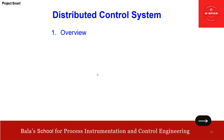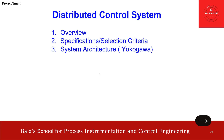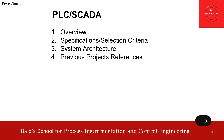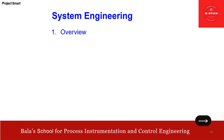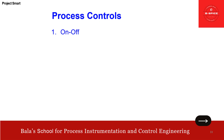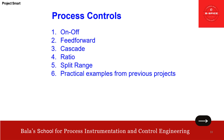Distributed control system — extensively covered: overview, specification, selection criteria, architecture — in detail with the example of Yokogawa DCS and previous project references. Then PLC SCADA — to be taken up very soon: selection criteria, specification, and architecture. System engineering and project engineering — already covered extensively with deliverables. Process controls — recently covered: on-off, feed forward, cascade, ratio, and split range — all covered using the Yokogawa system.